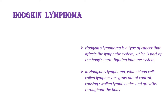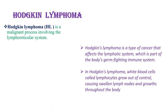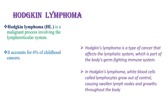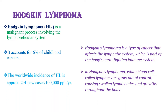Those lymphocytes grow out of control, causing swollen lymph nodes, and they disseminate throughout the body through the lymphatic system. Hodgkin's lymphoma is responsible for 6% of childhood cancers, and the worldwide incidence is approximately 2 to 4 new cases per 100,000 population per year.